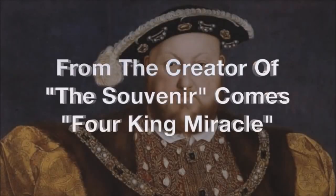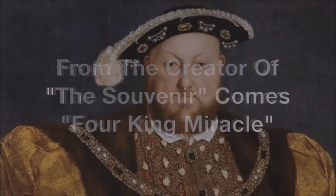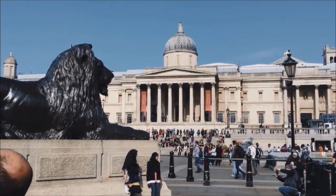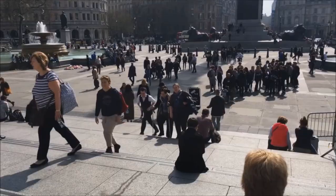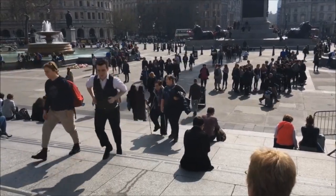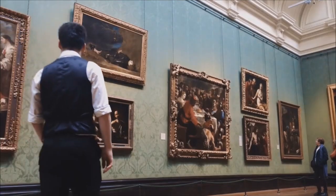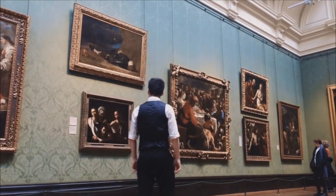Alright, so what is the Four King Miracle? The Four King Miracle is a packet trick. The trick starts off as two jokers. The spectators see two jokers front and back and then magically a king appears in between them. And then again you do the same thing. You have two cards, two jokers, and you make a king magically appear in between them.